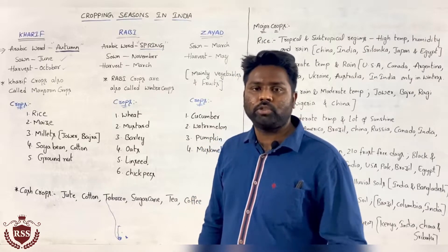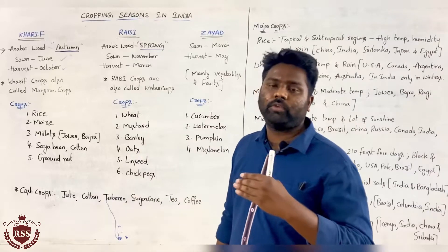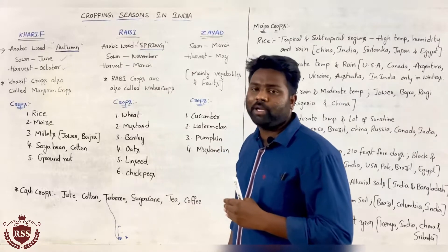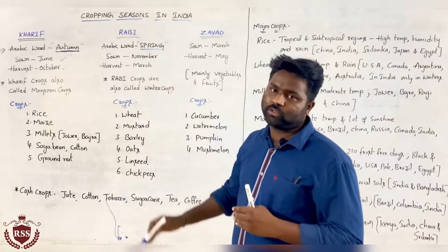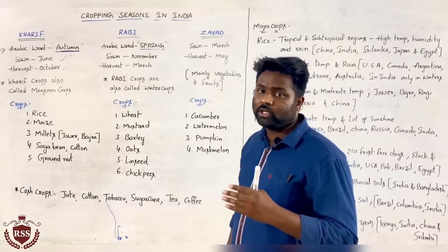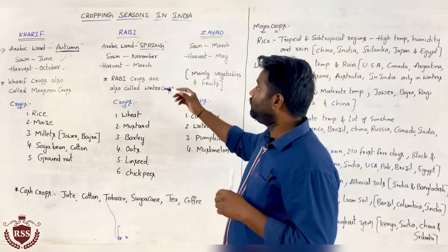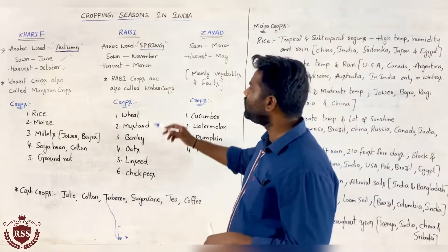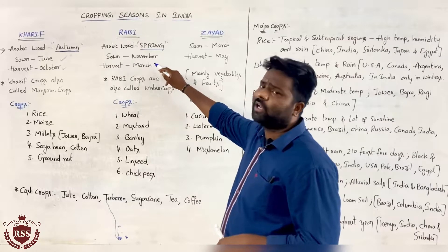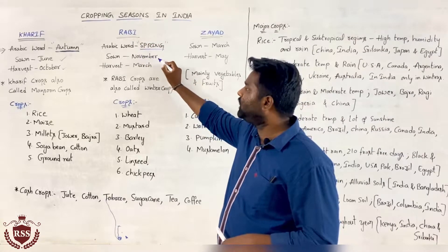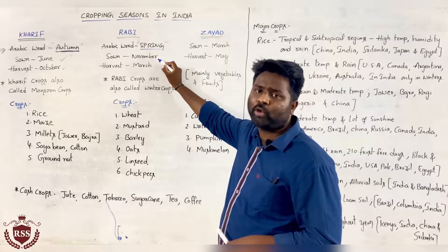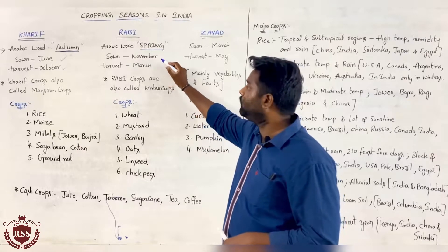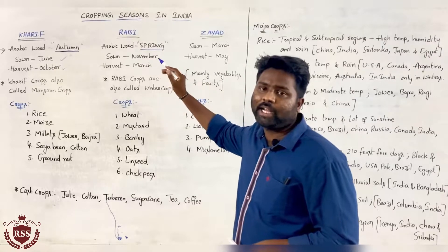The period from November to March, you have to link this with the seasons. From November to March, we are calling it the Rabi season. At the month of November they start sowing the seeds, and at the month of March they are harvesting the crop. From November to March is the Rabi season.